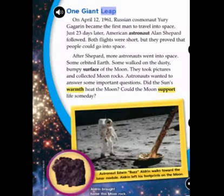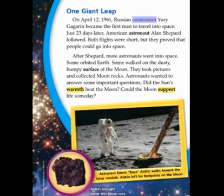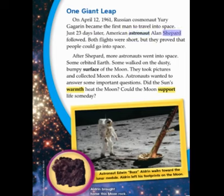One Giant Leap. On April 12, 1961, Russian cosmonaut Yuri Gagarin became the first man to travel into space. Just twenty-three days later, American astronaut Alan Shepard followed. Both flights were short, but they proved that people could go into space.